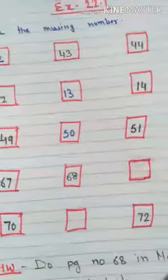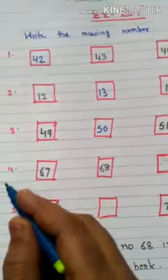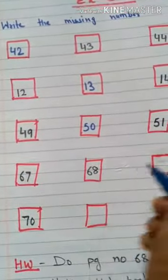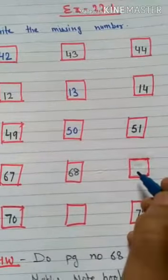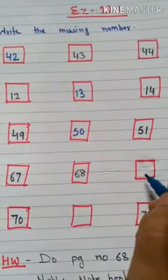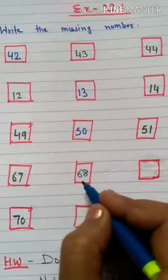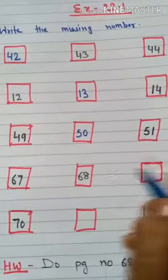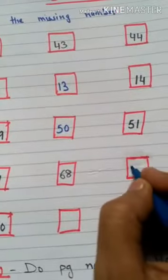Next question is 67, then 68 is given, and then we have to put the missing number here. Which number comes here? Here comes the after number, meaning 67, then 68, then 69.